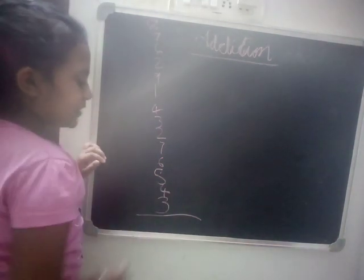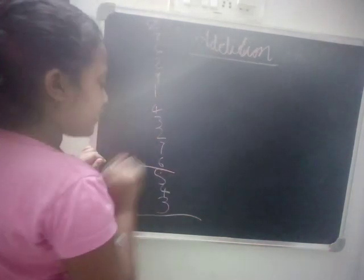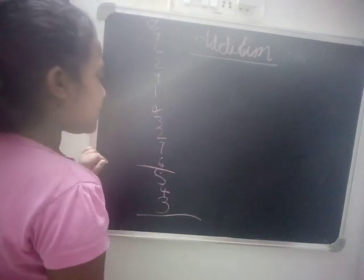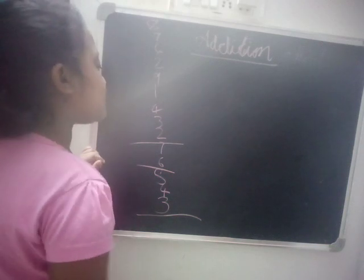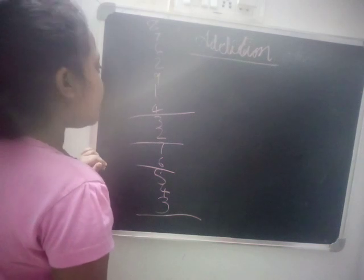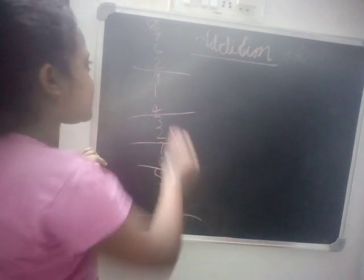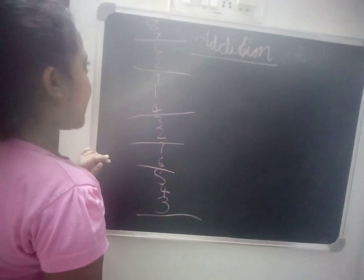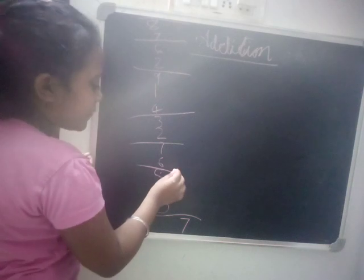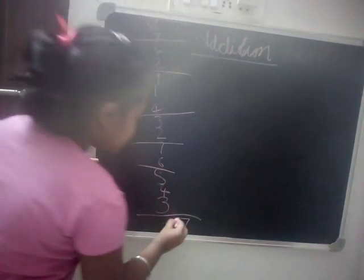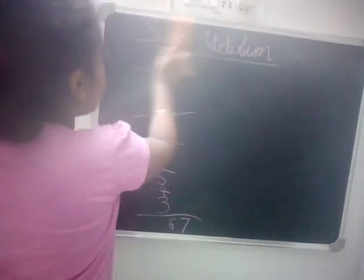3 plus 4 is 7, plus 5 is 12 — leave 10, keep 2. 2 plus 6 is 8, plus 7 is 15 — leave 10, keep 5. 5 plus 2 is 7, plus 3 is 10 — leave 10, keep 0. 4 plus 1 is 5, plus 9 is 14 — leave 10, keep 4. 4 plus 2 is 6, plus 6 is 12 — leave 10, keep 2. 2 plus 7 is 9, plus 8 is 17 — leave 10, keep 7. We have 6 tens, so the answer is 67.